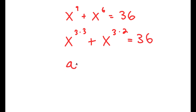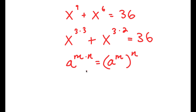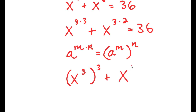Now, if I have something in the form a to the power of m times n, this is equal to a to the power of m to the power of n. So x to the power of 3 times 3 is going to equal x to the power of 3, to the power of 3, and x to the power of 3 times 2 is going to equal x to the power of 3, to the power of 2.